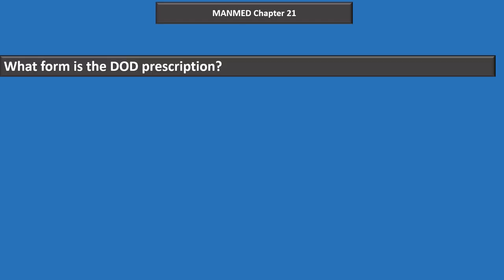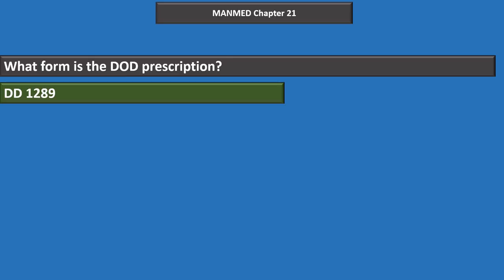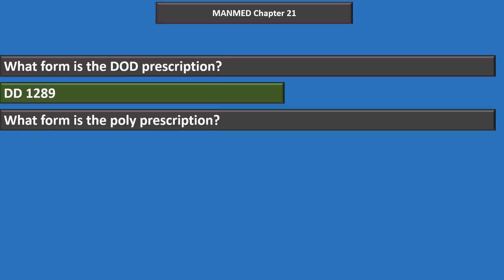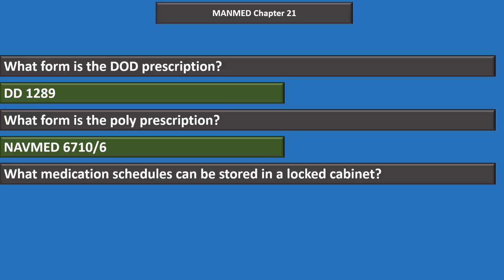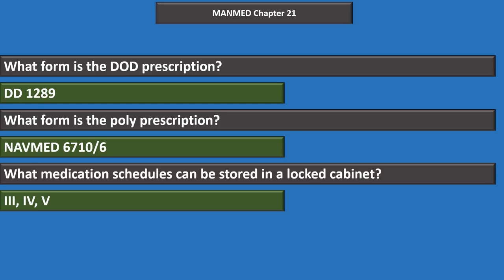The DoD prescription form is the DD-1289. The poly prescription is the NavMed 6710/6. Medication schedules that can be stored in a locked cabinet are schedules three, four, and five. Three members are required on a controlled substance inventory board, and one must be a commissioned officer.